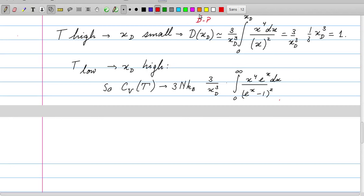But the result for this integral is that it's equal to 4π to the fourth over 15. If we put that value in, we get the c_v, but what is important is that the c_v goes like one over x_D to the power three.